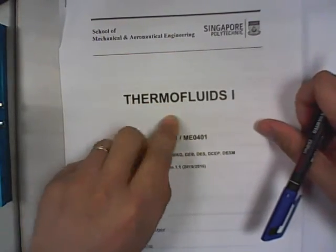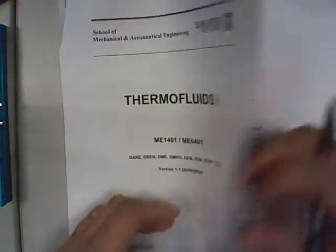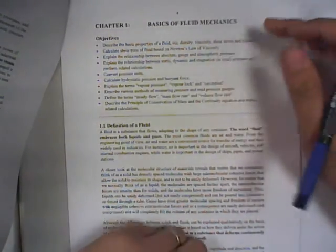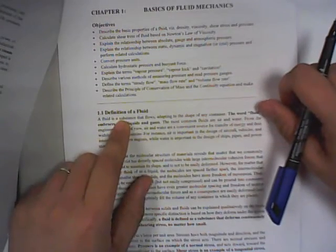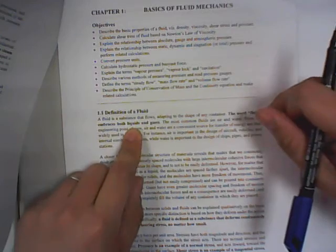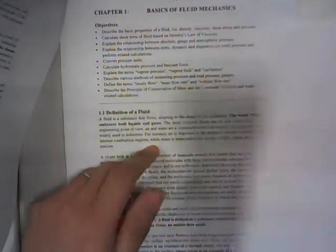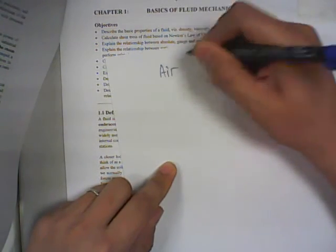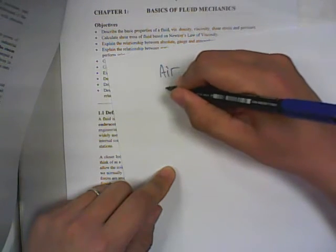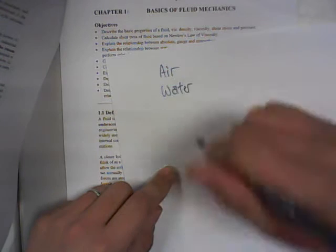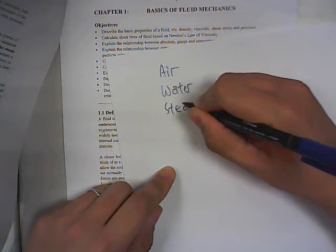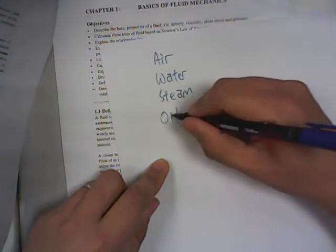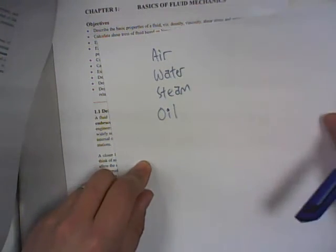Thermal Fluids 1, so there are two words there: Thermodynamics and Fluid Mechanics. Chapter 1 involves Fluid Mechanics. Before we start, we need to know the definition of a fluid. It is basically both gas and liquid. So you will have the common fluids: air, water, steam, and oil. These are the main fluids that this module will cover.